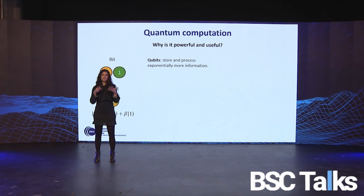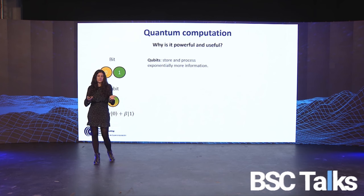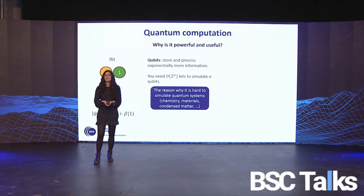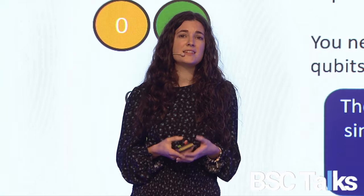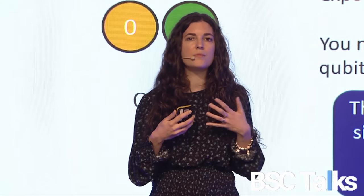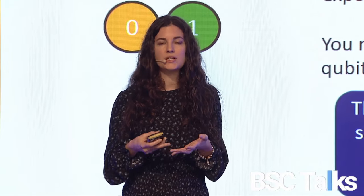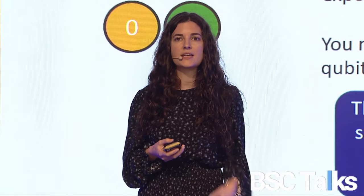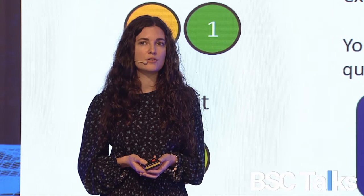Because of these superposition states, if we want to simulate what happens in a quantum computer with a traditional computer — even a supercomputer — we need an exponential amount of bits of information. This is the main reason why it's so difficult and resource-intensive to simulate quantum systems like chemistry, material science, and condensed matter models with classical computers.